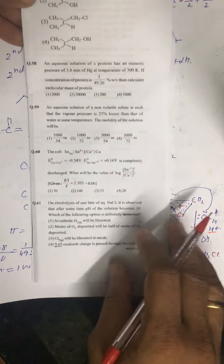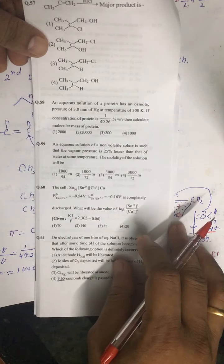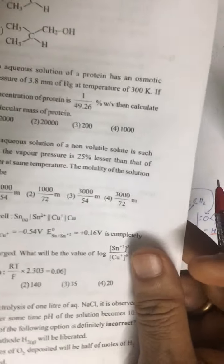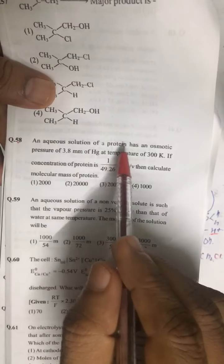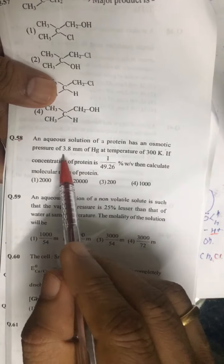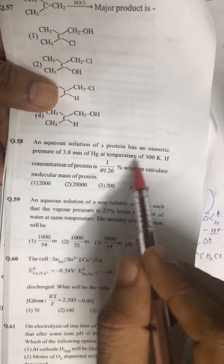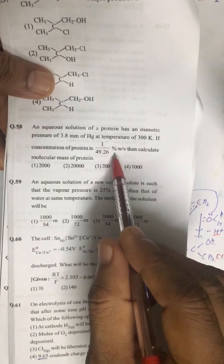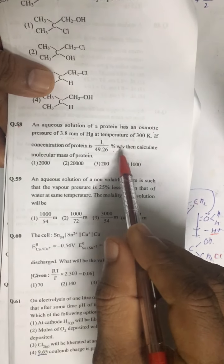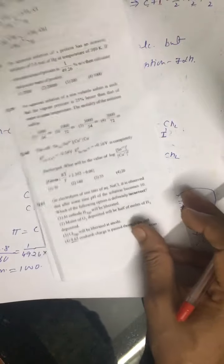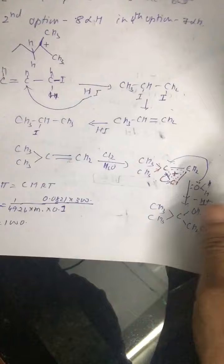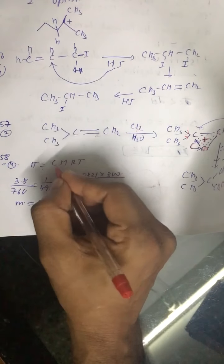Hello friends, we are continuing our discussion of Crash Test 1. Question number 58 says that an aqueous solution of a protein has osmotic pressure 3.8 mmHg at 300 Kelvin. Concentration is given as 1 by 49.26 percent, that is W/V (weight upon volume). We have to find out the molar mass of the protein. We know π = MRT.